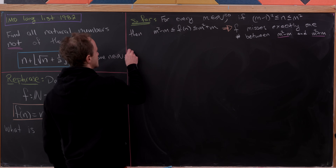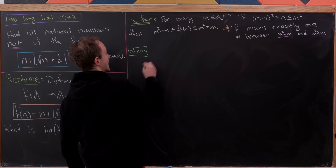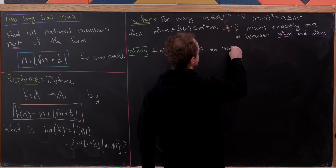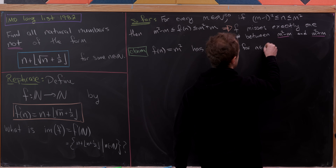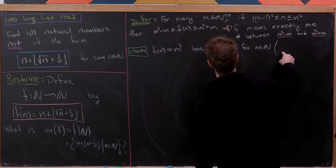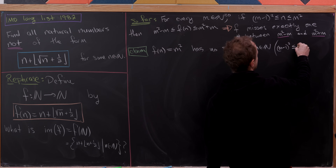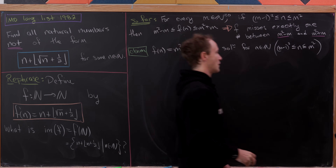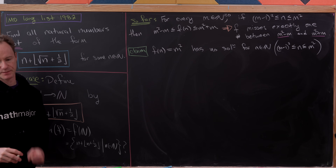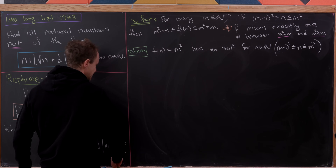Here's the claim: f(n) = m² has no solution for n in the natural numbers. We already know any possible solution must satisfy (m−1)² ≤ n ≤ m², so we can immediately restrict to that range by our preparatory results.